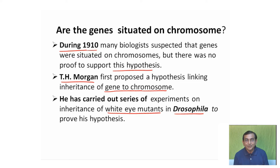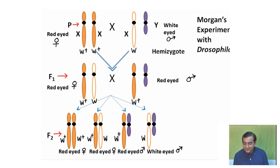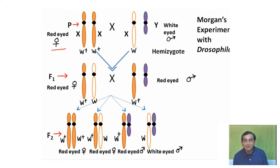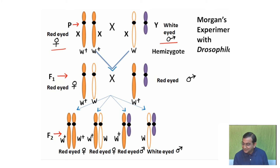In his laboratory, Morgan discovered white eye mutants in his Drosophila stock. He crossed a red-eyed female fly with a hemizygous white-eyed male mutant. In the F1 generation, he obtained progeny that were all red-eyed — both male and female.